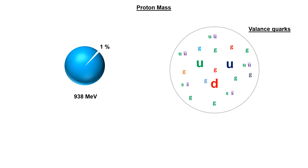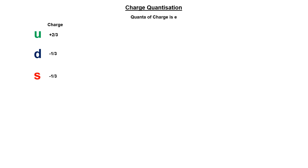These extra quark pairs are not permanent; they continuously annihilate and are created. According to Einstein, energy is equivalent to mass, and this energy is constantly converted into mass and mass into energy. Regarding charge quantization: the quanta of charge is the electronic charge, meaning charge is always an integer multiple of this quanta. But the charge of a quark is a fractional multiple. However, quarks cannot be separated from each other — in the proton, for example, up quarks carry +2/3 and down quarks carry −1/3, but these three always form a bound state with total charge +1. Since quarks do not exist individually, their fractional charge does not violate the charge quantization rule.